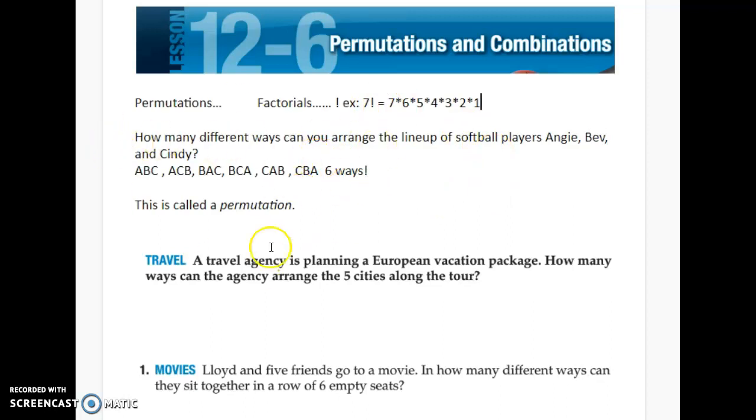So your math is going to look really exciting today because we're going to have all these exclamation points everywhere. So to do this, all you're going to do is take the number of people or objects that you have. So in this case, we had Angie, Bev, Cindy, three, and you're going to factorial that. So three times two times one equals six. And do you notice that it's the same answer there?